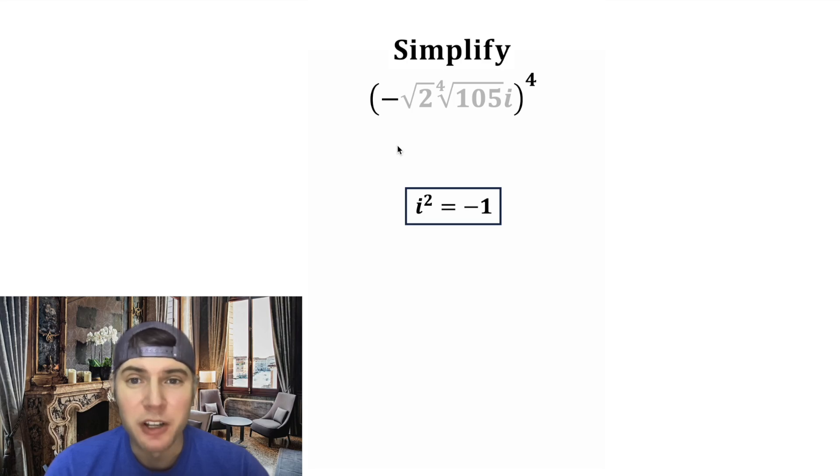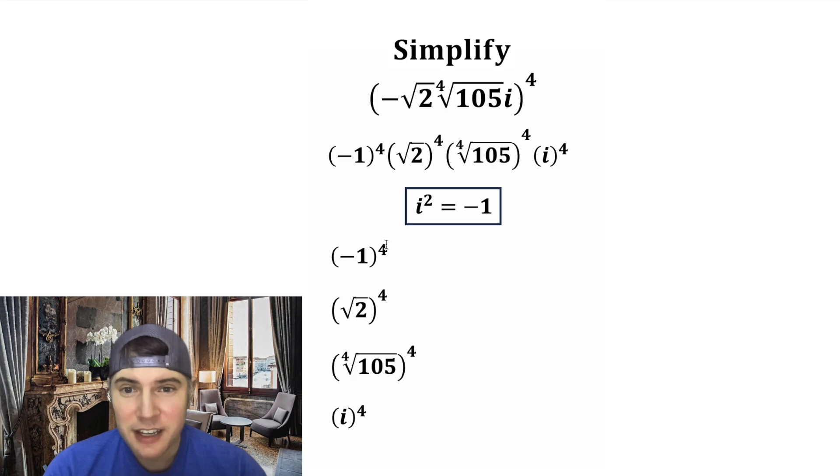This negative is essentially a negative 1, so it's gonna be negative 1 to the fourth power. And then this square root of 2 will become square root of 2 to the fourth power. And then this fourth root of 105 will become fourth root of 105 to the fourth power. And then this i will become i to the fourth power. Let's look at all four of these independently.